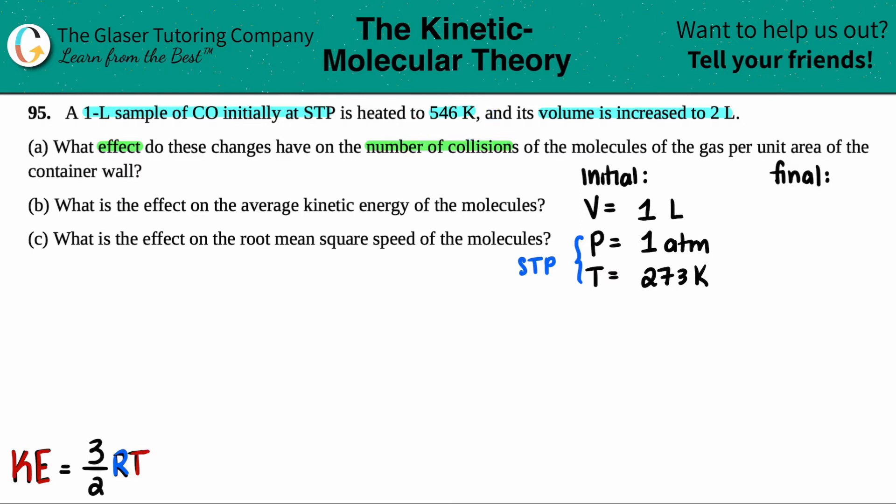Now it's saying that it's being heated to 546 Kelvin. So it went from 273 to a new temperature of 546 Kelvin. So it's getting pretty hot. And the volume also has increased to 2 liters. Now notice how they didn't tell us any pressure value. So we would have to assume that the pressure here is remaining constant. They didn't say that the pressure was jacked up to 2 ATM or anything like that. So we're going to say that pressure is constant.